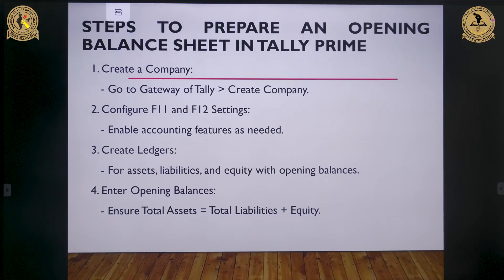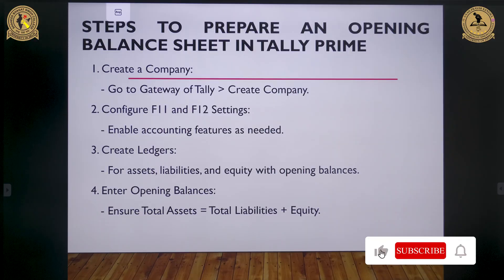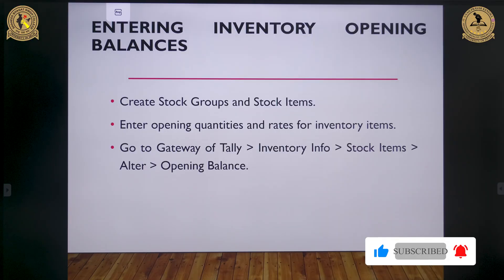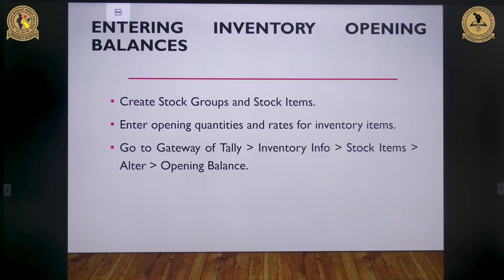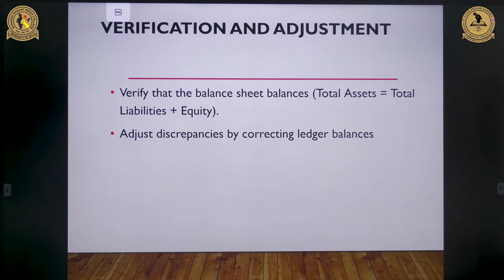These are the steps we follow for preparing our opening balance sheet in Tally Prime. First, we need to set up the company. Then we have to set all the accounting features as needed, and then create all the ledgers for assets, liabilities, and equity with opening balances. We also ensure that the respective assets match with liabilities and equity. If we maintain inventory, we create stock groups and stock items in Tally Prime, mentioning the opening quantity and rates for each item. Finally, it is very important to verify that the balance sheet is correctly balanced — if there are discrepancies, we need to adjust the ledger balances to avoid errors in financial reporting.